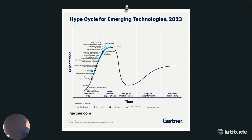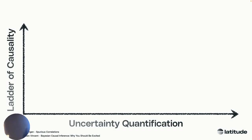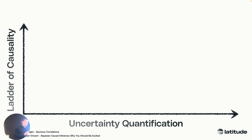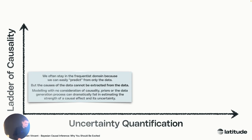We are not as far as generative AI, which is at the peak of inflated expectations — I think we might already be past that. But we're on our way up with causal AI. This is a great graph that a guy from PyMC once showed — it's basically the ladder of causality.